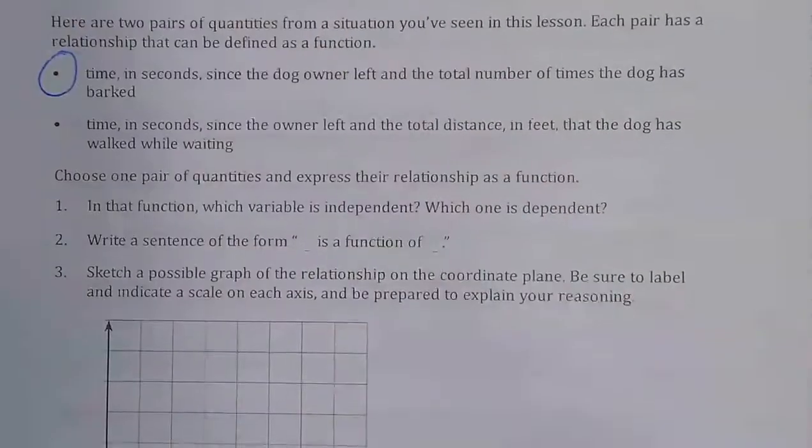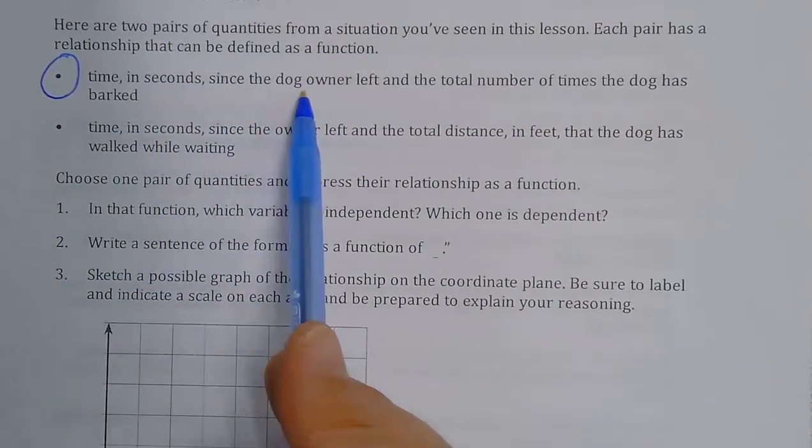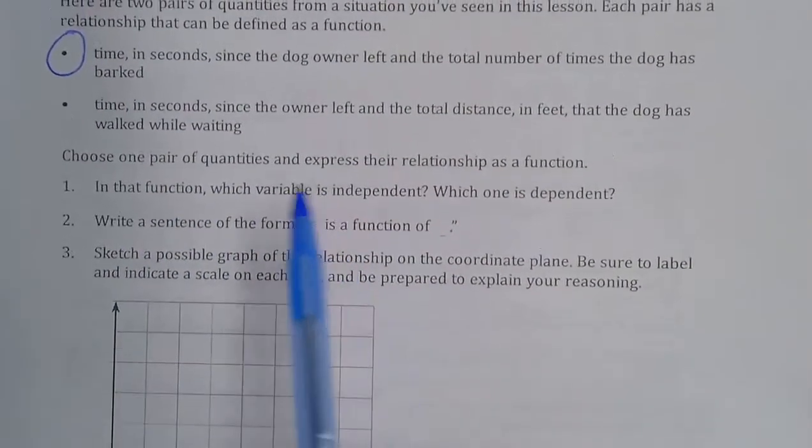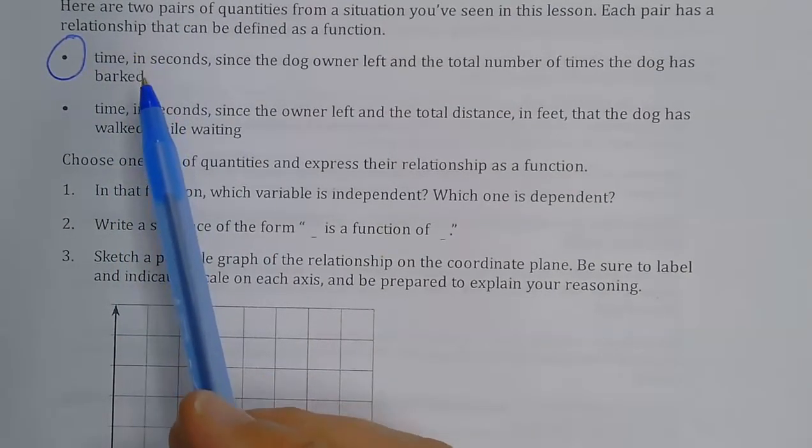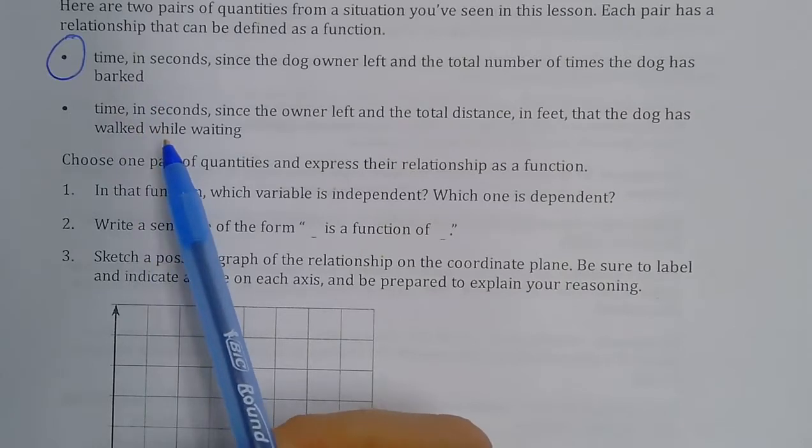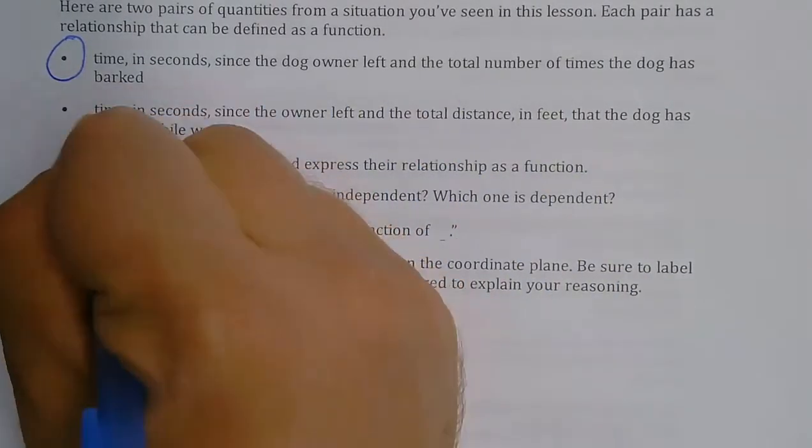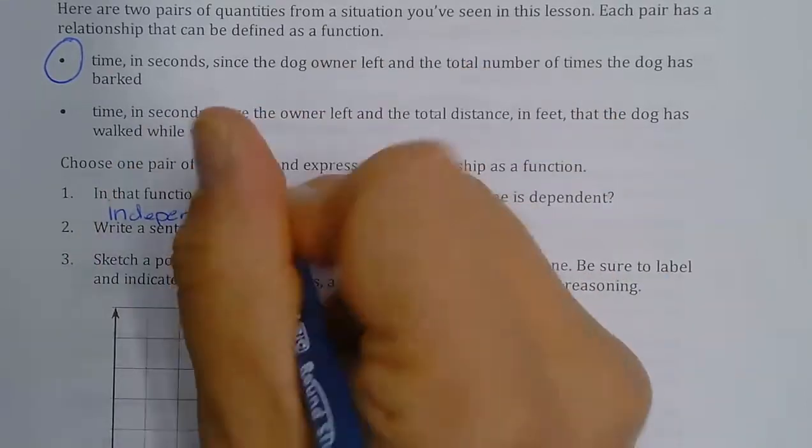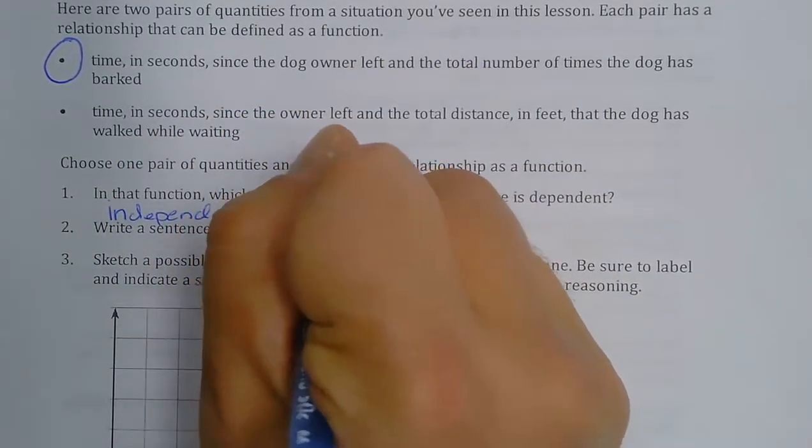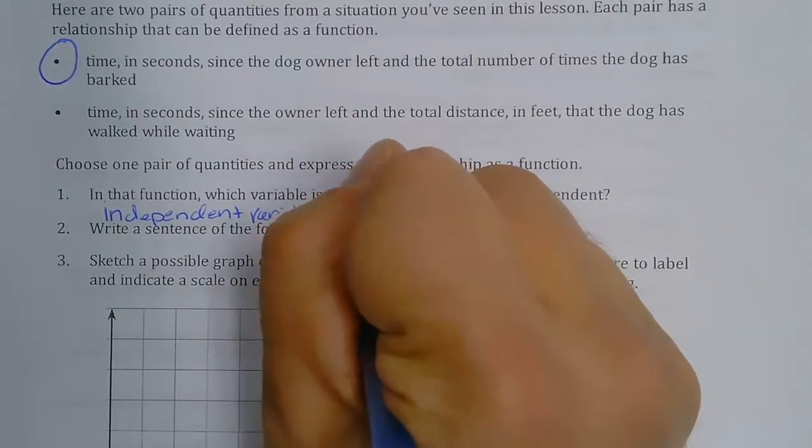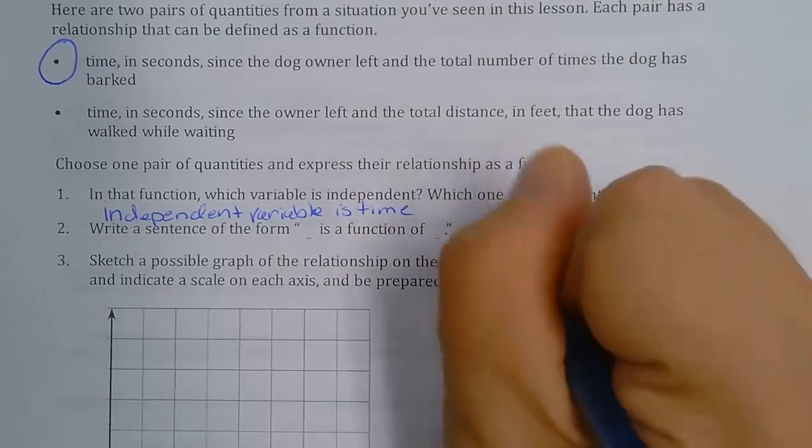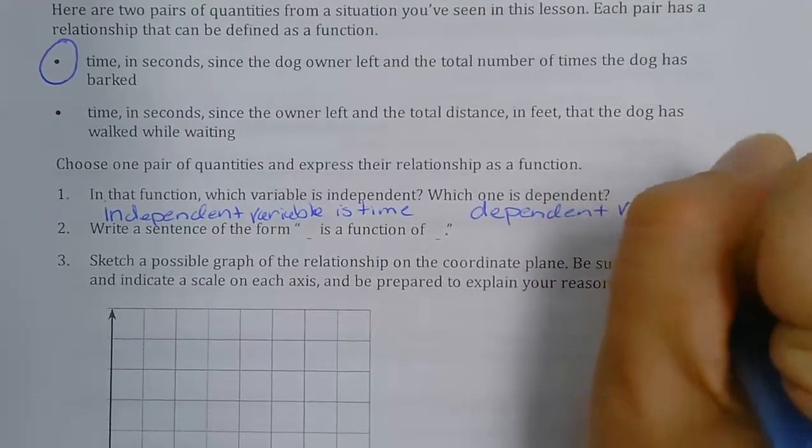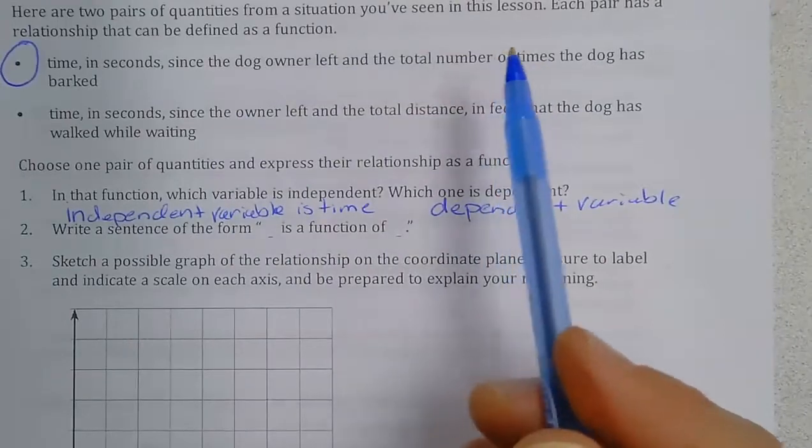So what we're going to do is choose this first one. We have time in seconds as the dog owner left and the number of barks. So in the function which variable is independent? Well the independent variable is the input. So I would input a time and then the output of the function would be how many times the dog has barked. So the independent variable or the input is time, and the dependent variable is the total barks.